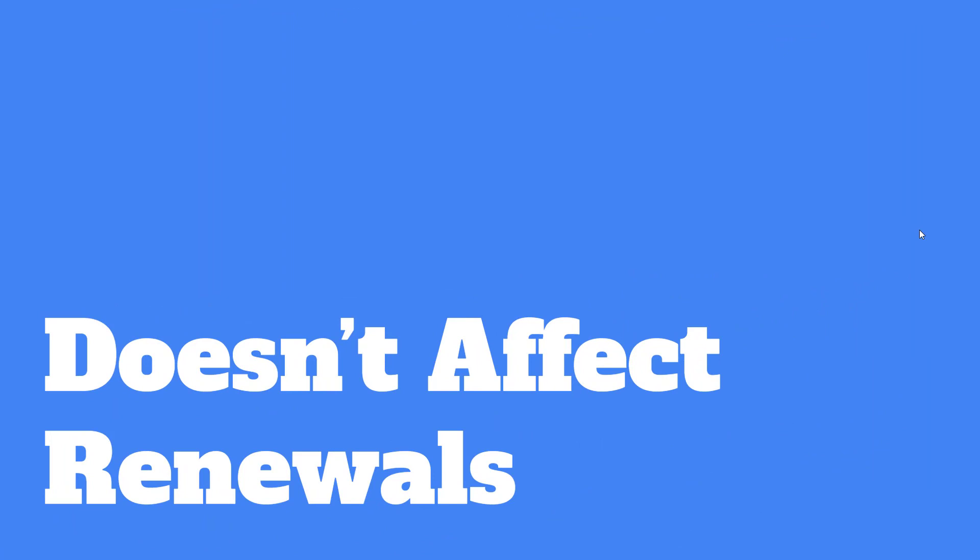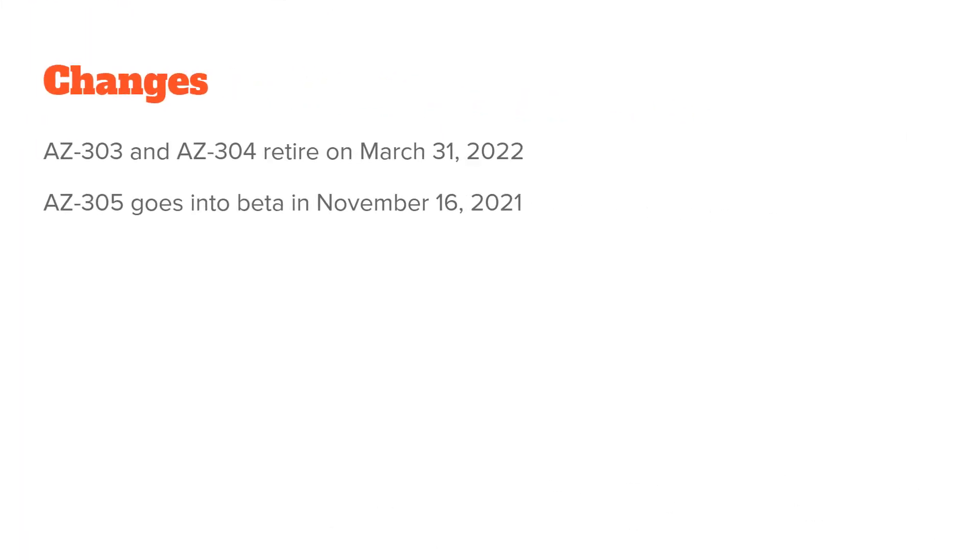If you've already passed Azure Architect Expert, this change doesn't affect you. You do not have to take AZ-305 or go through that process again. There are some people who are thinking about taking it just for fun — and you can take the AZ-305 — but if you've already passed 303 and 304, your life hasn't changed because of the renewal process.